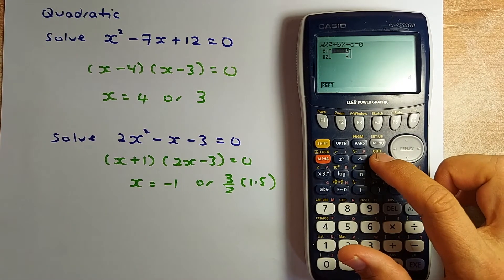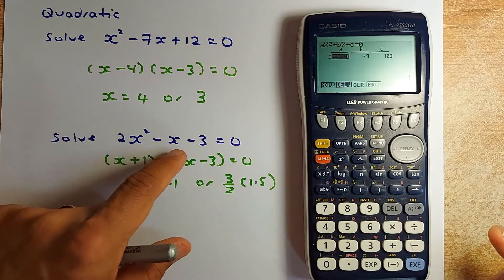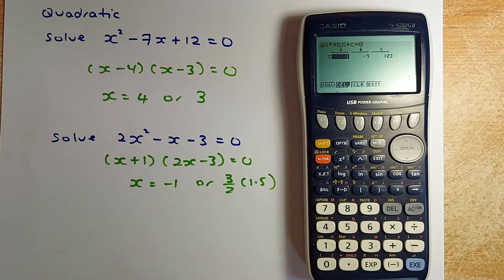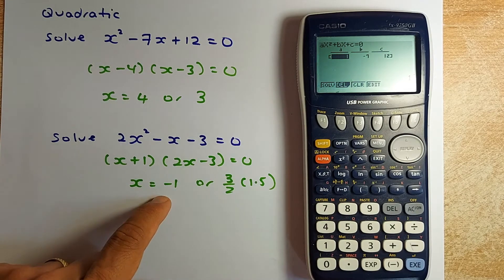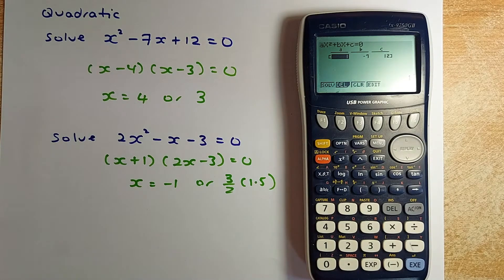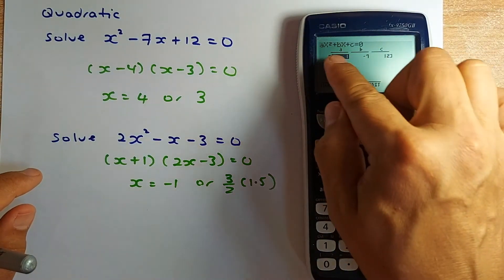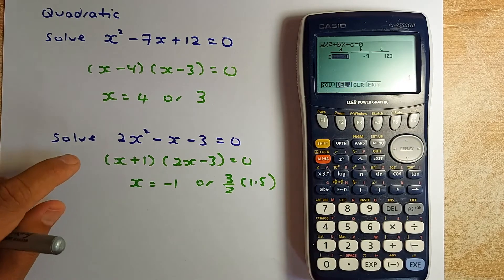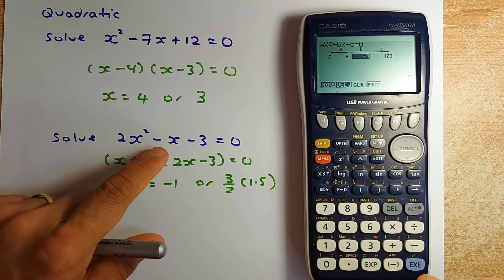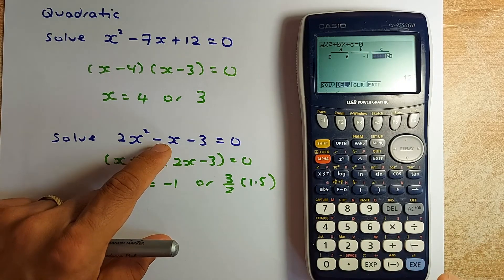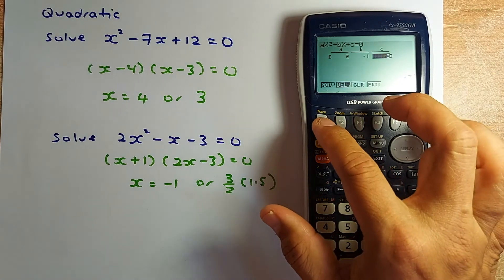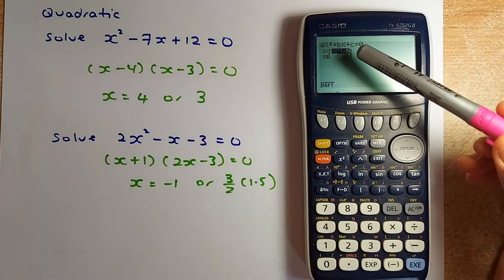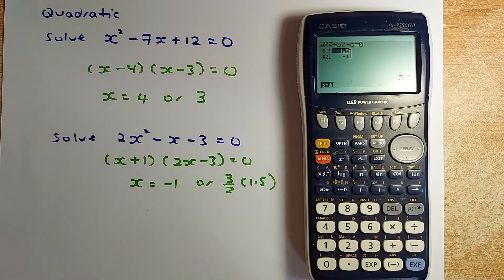Now we shall do the second equation. More complicated. Now we have 2x squared minus x minus 3 equal to 0. So what you do, you are going to factorize them. I have done beforehand. So x plus 1, 2x minus 3. And the answer is minus 1 or 1.5. So where do you put in? So it must be that form, ax squared plus bx plus c. So the first thing you do, you are going to put 2. Execute. The next number must be negative 1. Don't forget there is a negative 1. And the last number is negative 3. Execute. And the last thing you do, you press the solve button. And the answer, as you can see, is 1.5 and negative 1. And that's what we got. Negative 1 and 1.5.